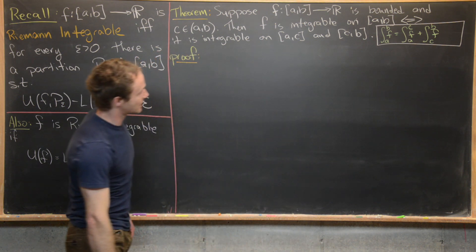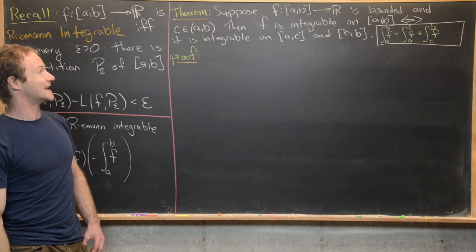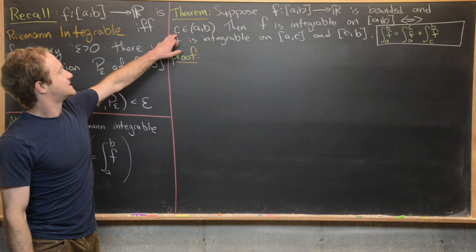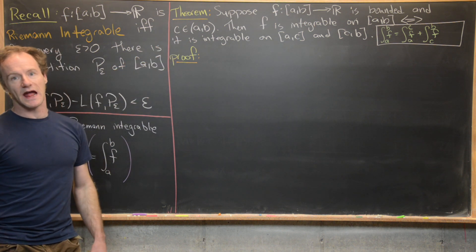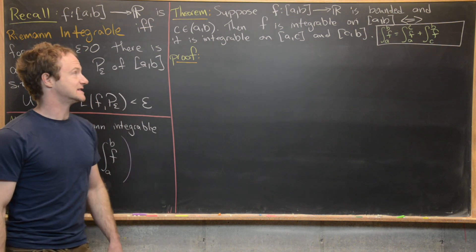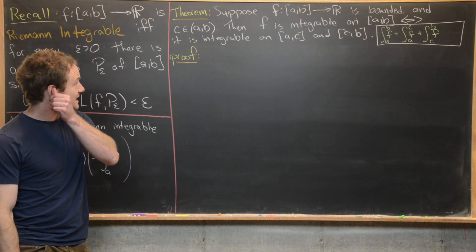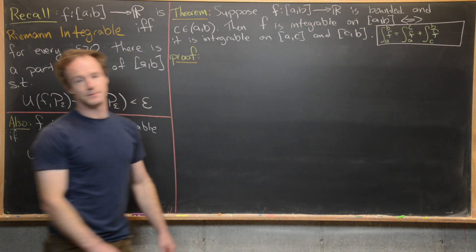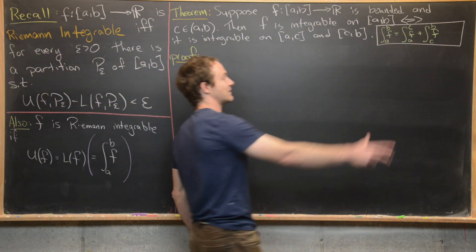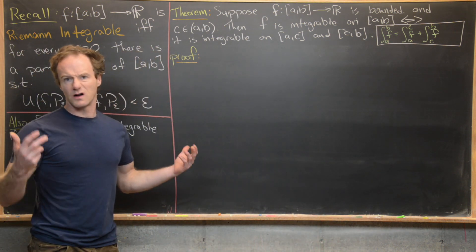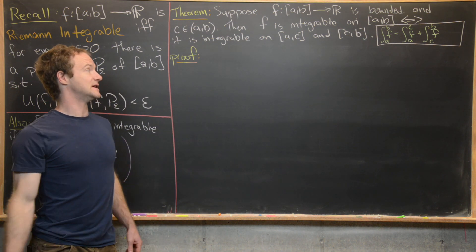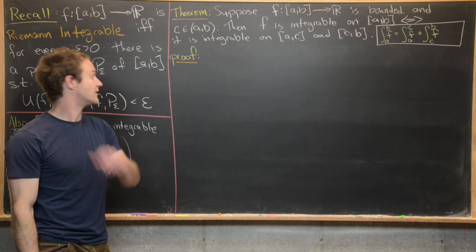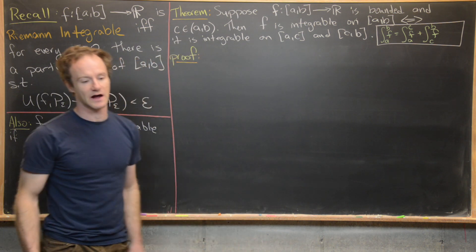The first result we're going to prove goes like this. Suppose that f from [a,b] to R is bounded and c is some point between a and b. Then f is integrable on [a,b] if and only if it's integrable on [a,c] and [c,b], and in that case the integral from a to b of f equals the integral from a to c of f plus the integral from c to b of f — familiar from calculus.